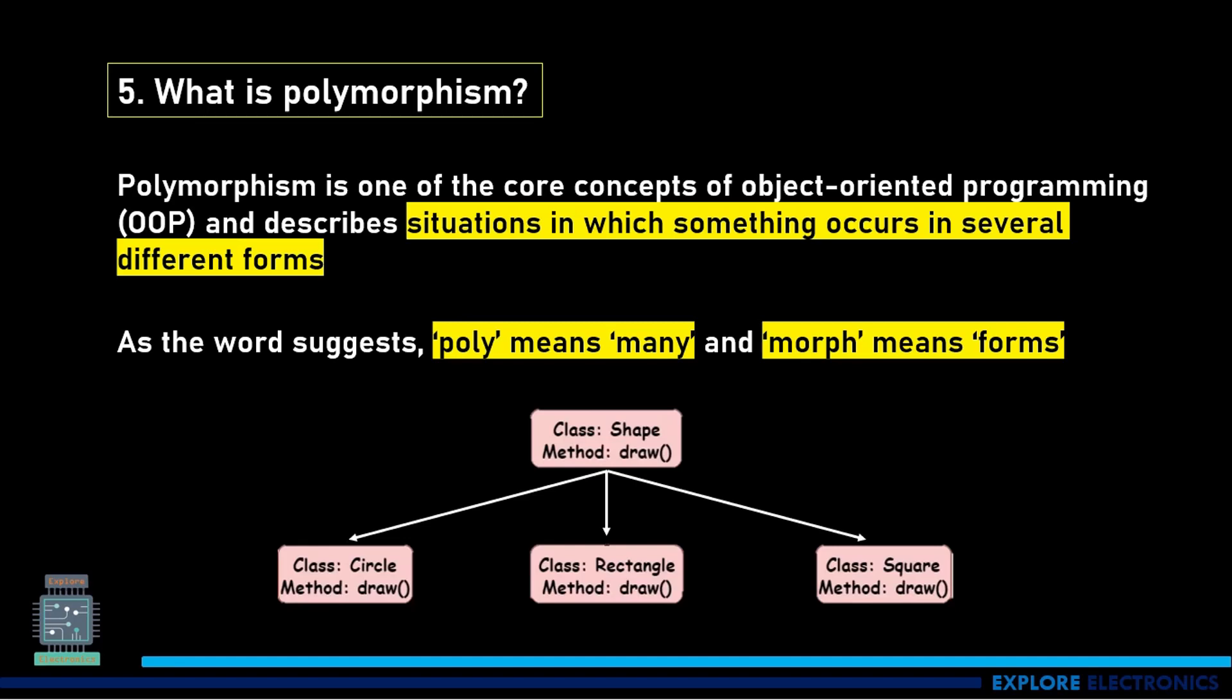For example, you can take class shape and method draw. The same method draw can be used in class circle, class rectangle, and also in class square, but drawing a circle and rectangle and square differs.